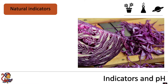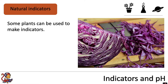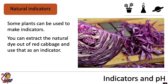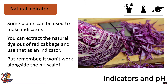There are also natural things that can be used to make indicators. For example, some plants can be used to make indicators. You can extract the natural dye out of red cabbage and use that as an indicator, but remember it won't work alongside the pH scale. I'm going to show you a practical now whereby we extract the dye out of the red cabbage to make an indicator and show you the range of colours we will see in acids, alkalis, and neutral substances.